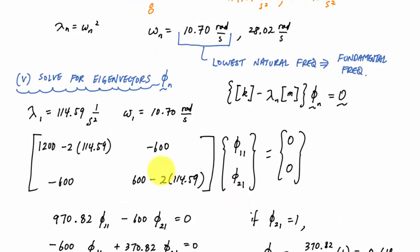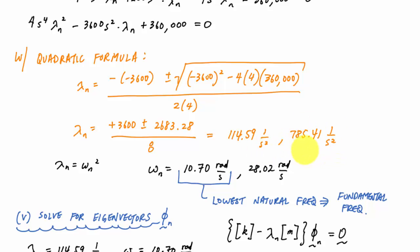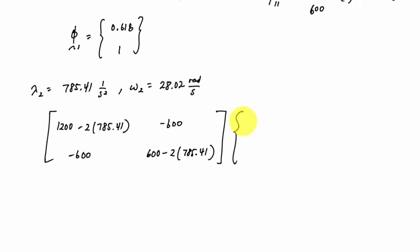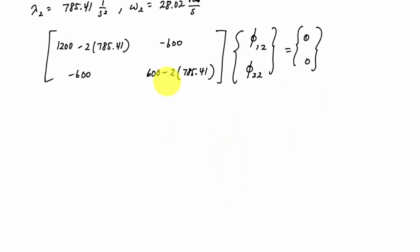Now I'm going to repeat the process for the second eigenvalue, the 785.41, to get my second eigenvector. Here I would have location one mode two, location two mode two equal to zero. When I work out the algebra, if I say the second story is equal to one, then I know that phi one two equals negative 1.61. So this would be mode two.